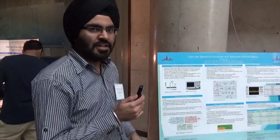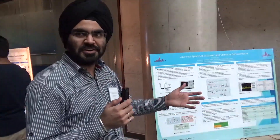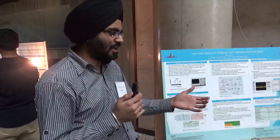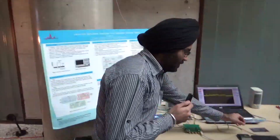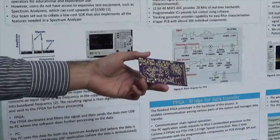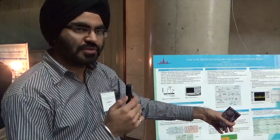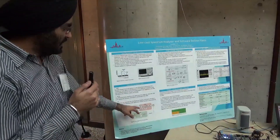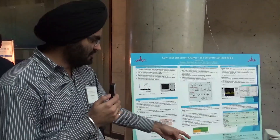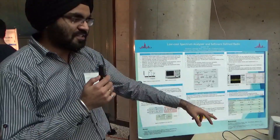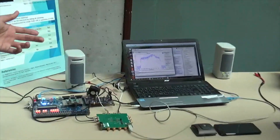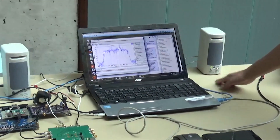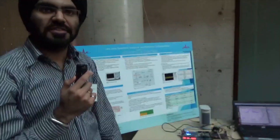Our project is a low-cost spectrum analyzer which can also be used as software-defined radio. The motivation is that you can buy cheap oscilloscopes and other lab equipment, but you cannot buy a cheap spectrum analyzer — that's the market we wanted to exploit. We designed a PCB with all the front-end analog components and an ADC that digitizes the signal and sends it to the FPGA. The FPGA does signal processing and then sends it via a USB 2.0 high-speed chip to a PC, where you do FFT and display it on screen. For software-defined radio, you can demodulate the signals — analog or digital — and listen to them or do whatever you want.